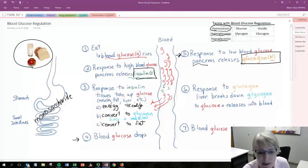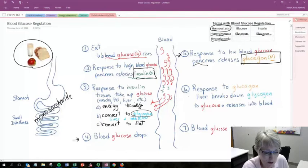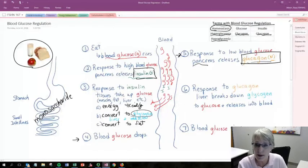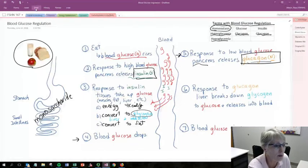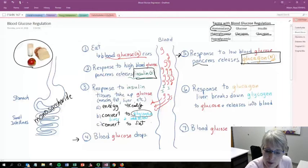I always like to have students pay attention to glycogen and glucagon, which are very similar words but very distinct. Glycogen is that storage form of carbohydrate and glucagon is this hormone produced by the pancreas and released into the blood. So let's add some abbreviations. We're going to add that to our blood.